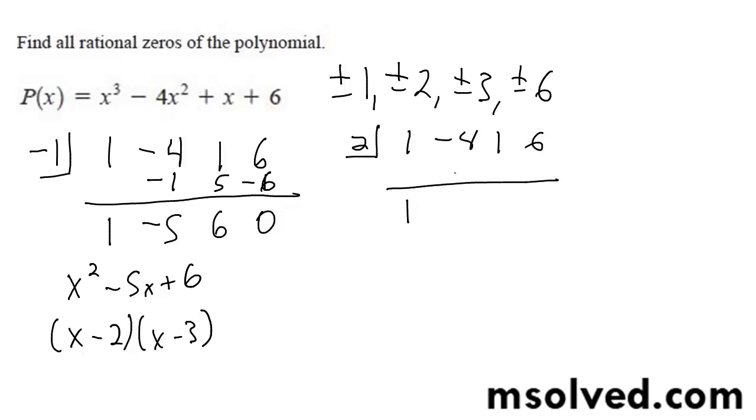All right, so with 2 I get 1, 2, negative 2, negative 4 gives me negative 3, gives me negative 6, gives me 0.